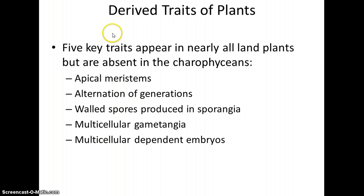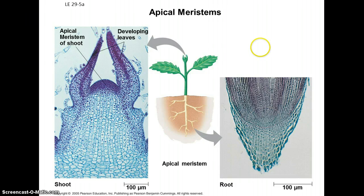So what basically makes a plant a plant? Plants basically helped lead the invasion of land long ago, and having certain characteristics helped in doing this. All plants have an apical meristem at the tips of their roots and shoots — clusters of cells that are actively going through cell division to cause the plant to grow.